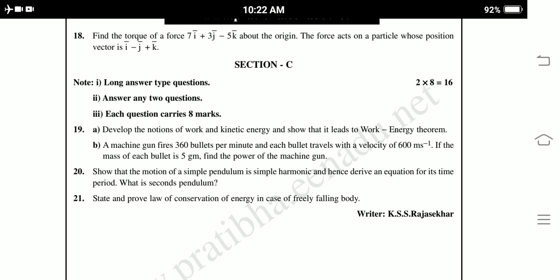Section C has long answer type questions, one question carries 8 marks, 2 into 16 marks. There are 3 questions given, we need to attend only 2. Nineteenth question has two parts: Develop the notions of work and kinetic energy and show that it leads to work-energy theorem. A machine gun fires 360 bullets per minute and each bullet travels with a velocity of 600 meters per second. If the mass of each bullet is 5 grams, find the power of the machine gun.